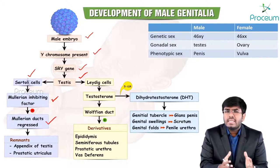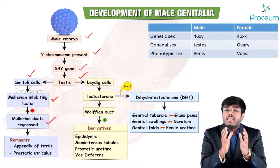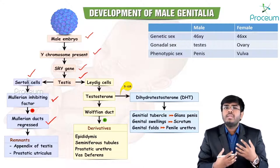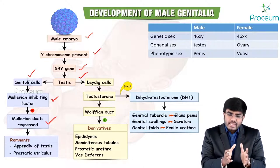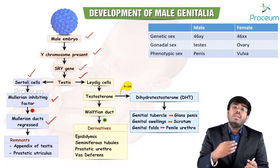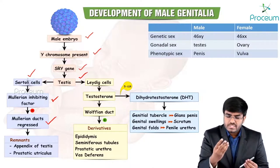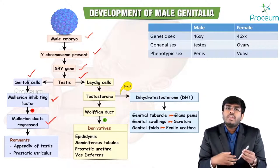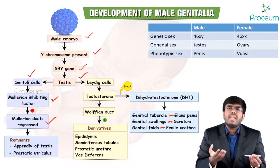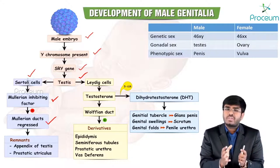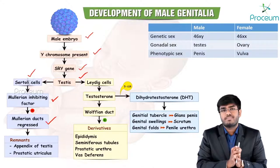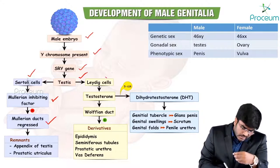Müllerian Inhibiting Factor is going to inhibit the Müllerian ducts. Once the Müllerian ducts are inhibited or regressed in a male fetus, there are no Müllerian duct derivatives. So a male fetus makes MIF, which causes regression of the Müllerian ducts. Therefore, Müllerian duct derivatives — uterus, fallopian tubes, cervix, and upper two-thirds of vagina — do not develop in a male fetus.